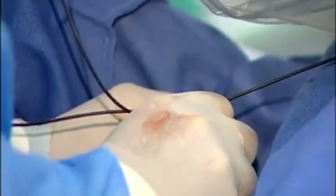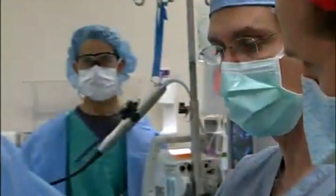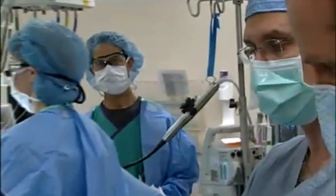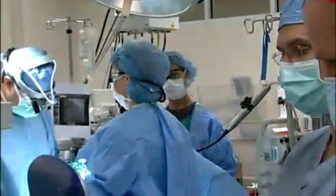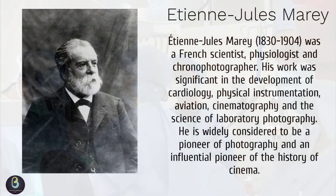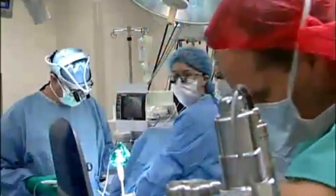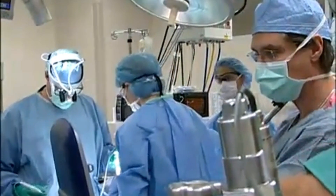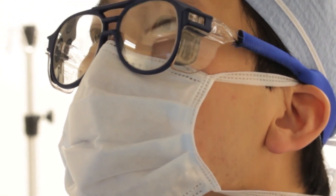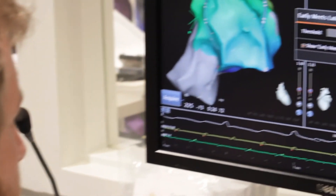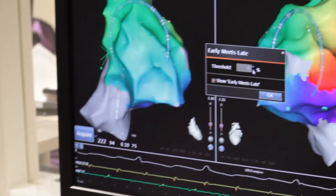The discovery of the gap junction in cardiac cells was made by M. Karnikovsky in 1967, while Etienne Jules-Marie was the first to document ventricular premature beats. He also described the refractory period of the heart and produced the first graphically recorded ECG in an animal in 1876. Fun fact: he also invented cinematography.